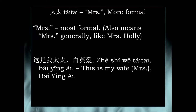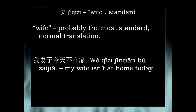Let's speak about the first one: 太太. 太太 means 'Mrs.', which also means wife, and it's the most formal of the three. For example, Mrs. Holly. Here's an example of how to use this: 这是我太太, 白因爱 — 'This is my wife, 白因爱' (her name). So 太太 means Mrs., the very formal version of wife.